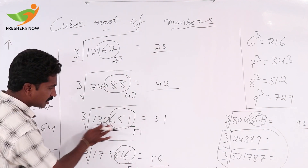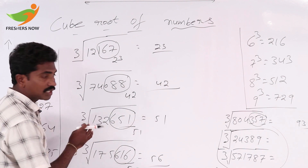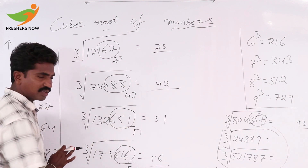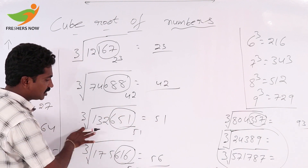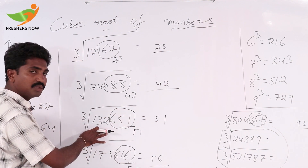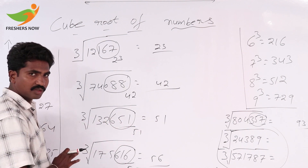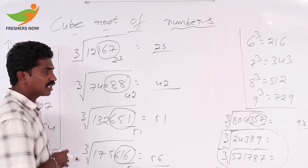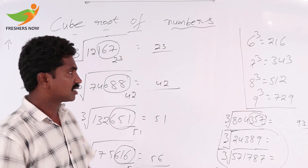If we take the number 132,651: units place value 1 is there, 1 cube is 1, so units place value is 1 — confirmed. Next, keep 3rds away: 132 is there, 5 cube is 125, 6 cube is 216, so we can take 5. Now you have understood — by using this technique we can solve it easily within 4 or 5 seconds.